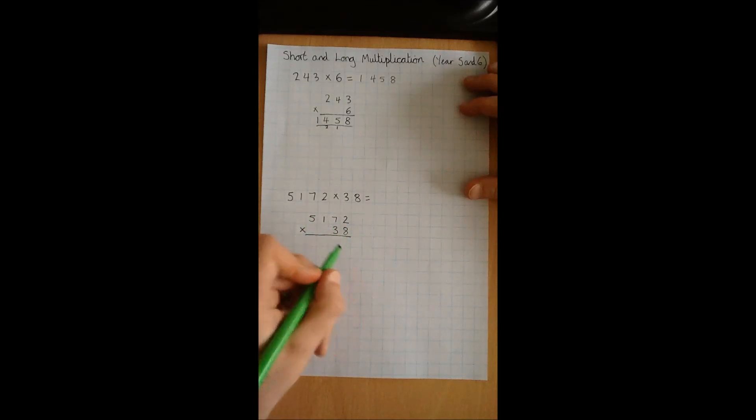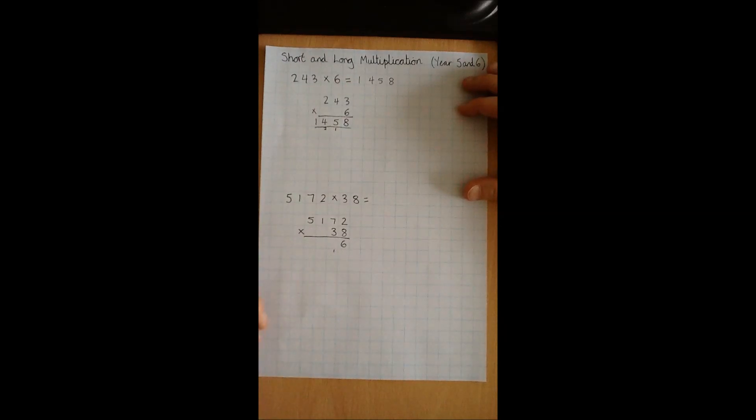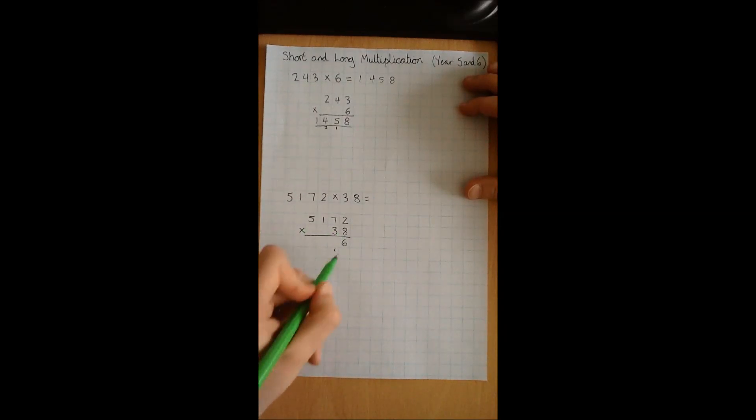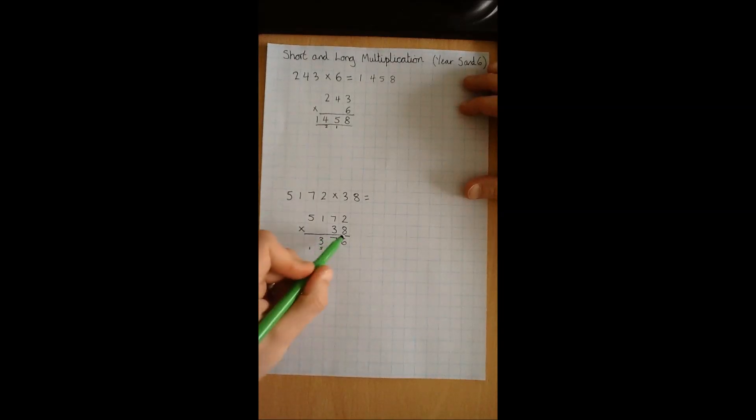So 8 multiplied by 2 is 16. 8 multiplied by 7 is 56, plus the 1 that we carried gives us 57. 8 multiplied by 1 is 8, plus the 5 is 13. 8 multiplied by 5 is 40, plus the 1 that we carried gives us 41.